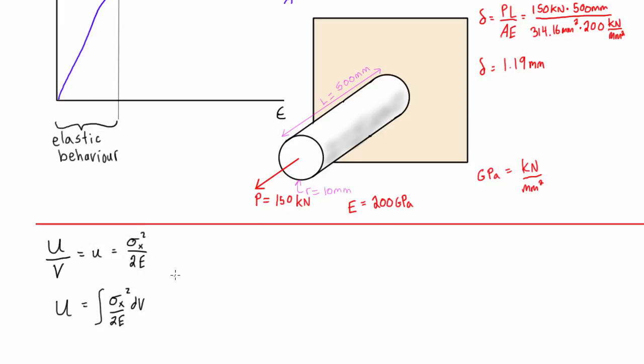And then what we can also say is that we know that sigma x is just equal to the applied load over the area. So we can rewrite this as the integral of P squared over 2A squared E, A squared E, dV.